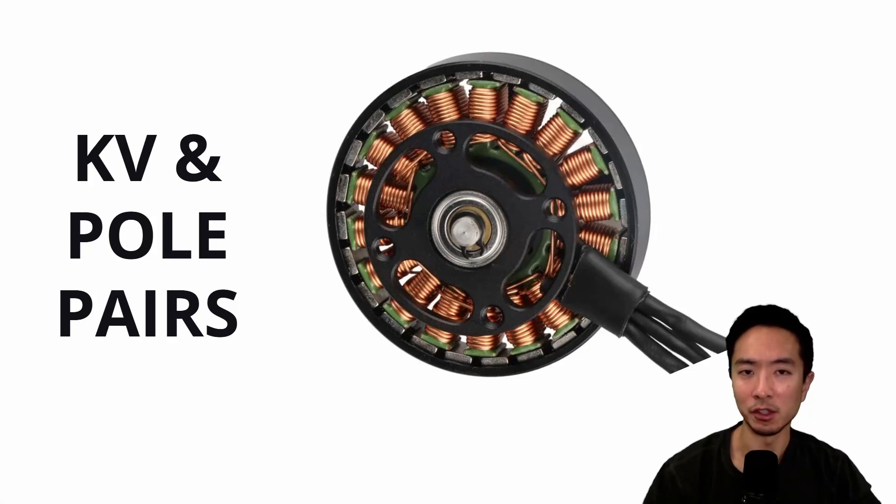So you just got a motor that has no specs and you're trying to control it. How do you figure out the KV and pole pairs of your motor? Let's find out.